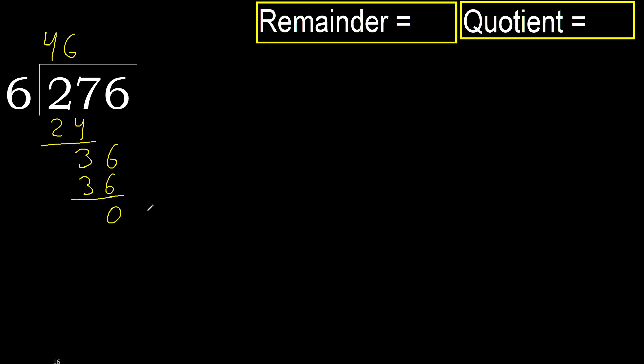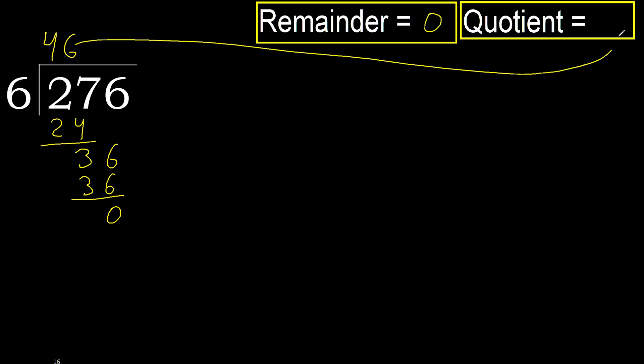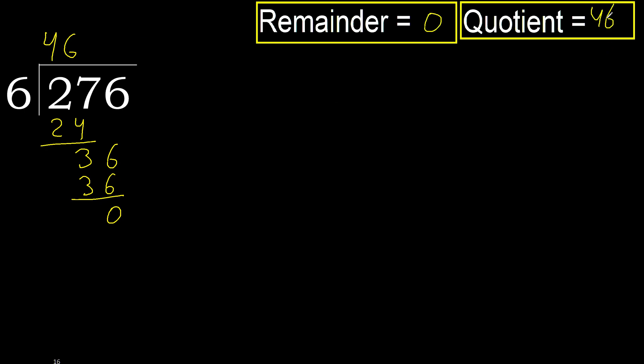There is no next number, therefore finished. 276 divided by 6 is 46.